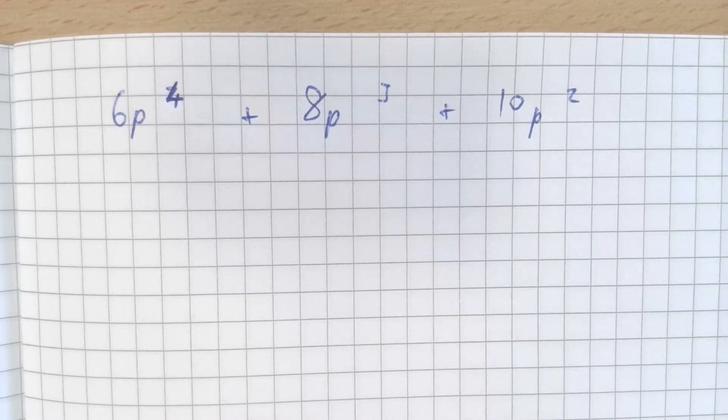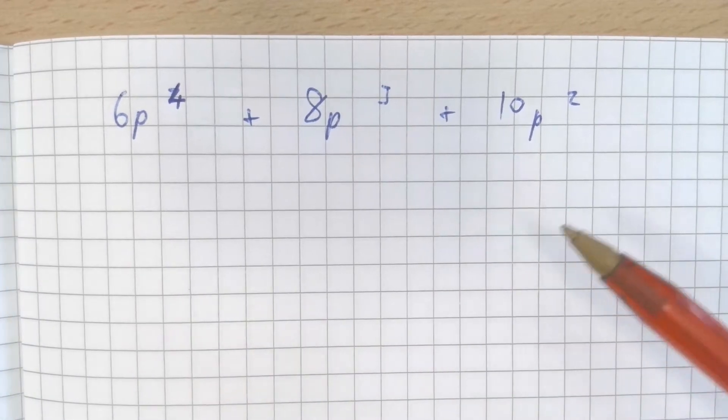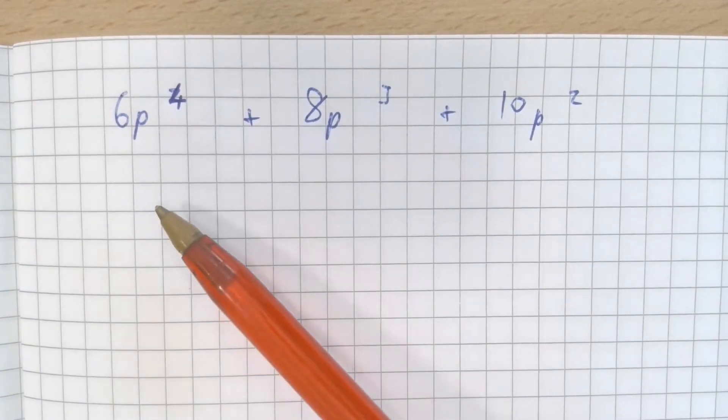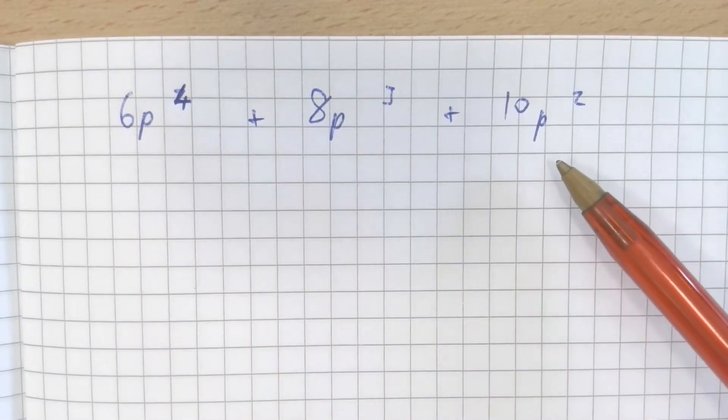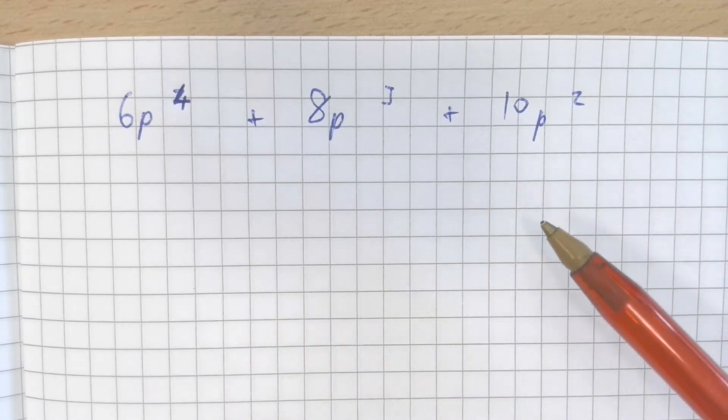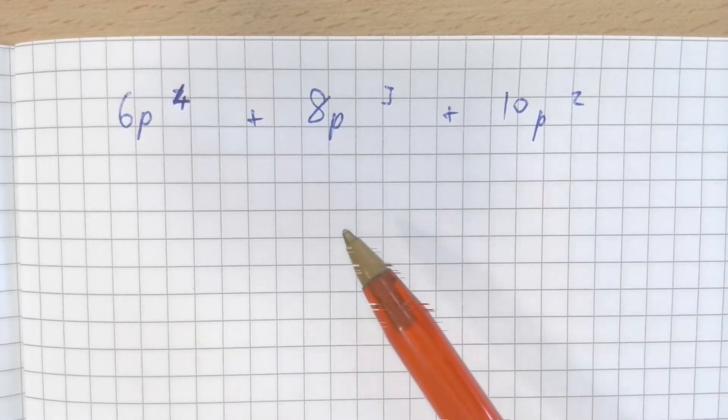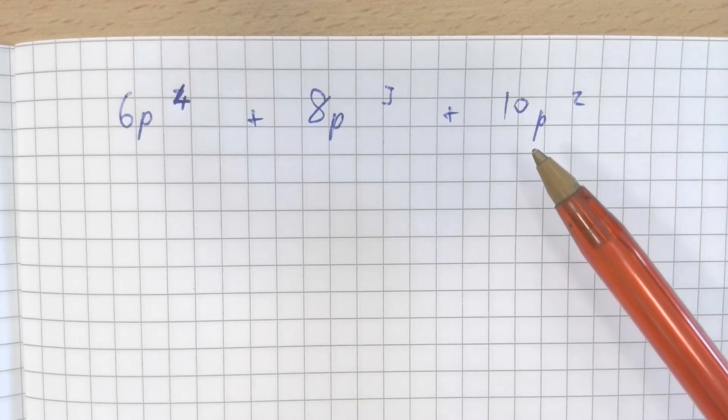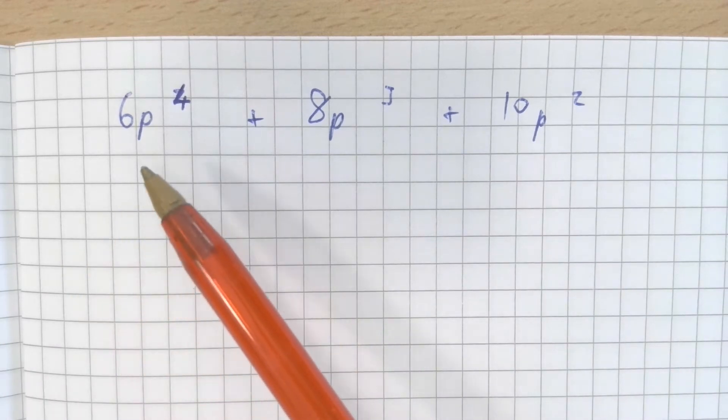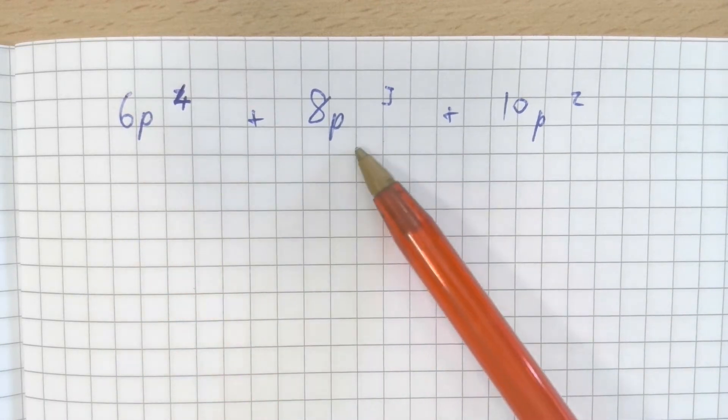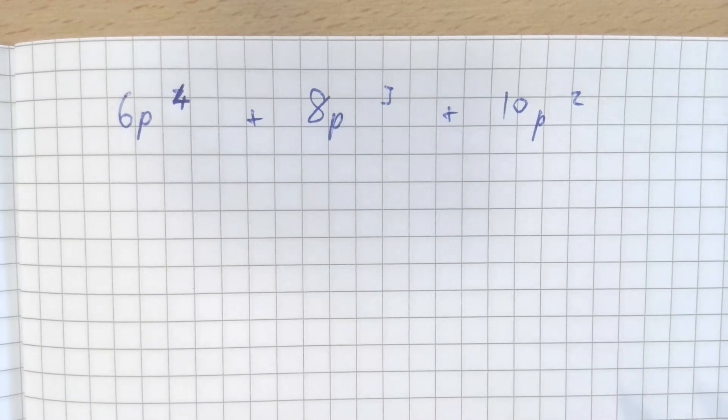This is an algebraic expression here: 6p to the power of 4 plus 8p cubed plus 10p squared. We know that there's an element in the numbers that's common between all of these terms and there's an element in the algebra p to the 4, p cubed and p squared that's common in all these terms.